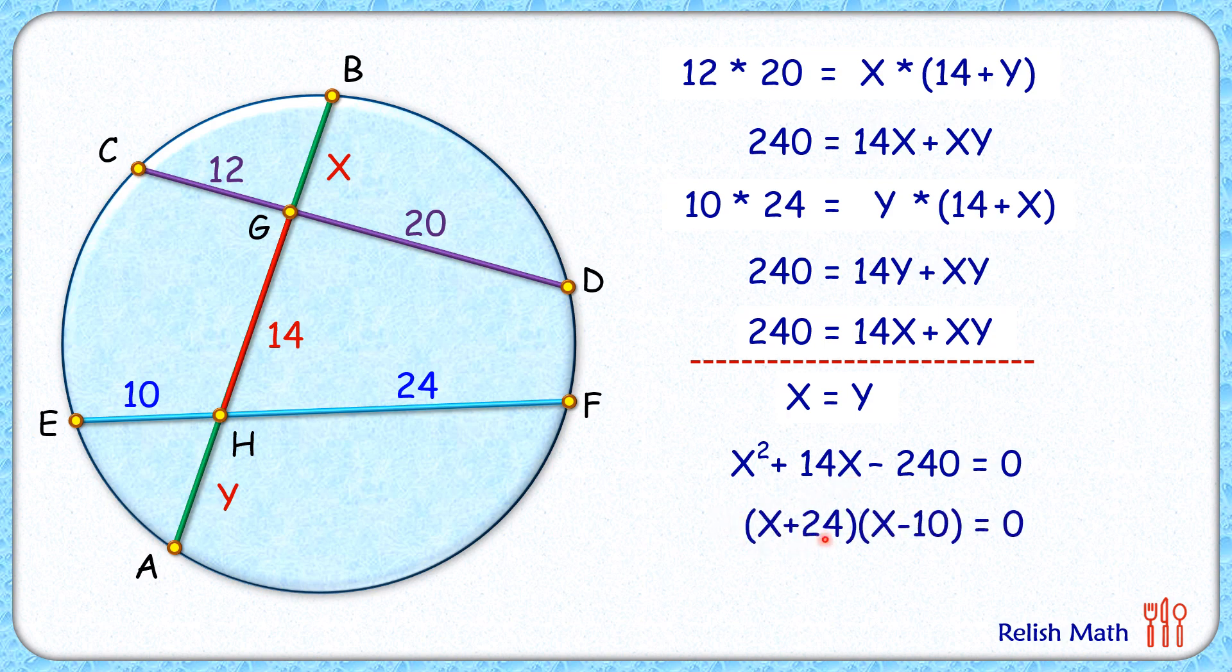Now here, solving this by factorizing the middle term, so splitting the middle term as plus 24 and minus 10. So we'll get x plus 24 times x minus 10 equals 0. Solving it, we'll get x as minus 24, but x can't be negative. It's the length of BG, so solving it, we'll get x equals 10.